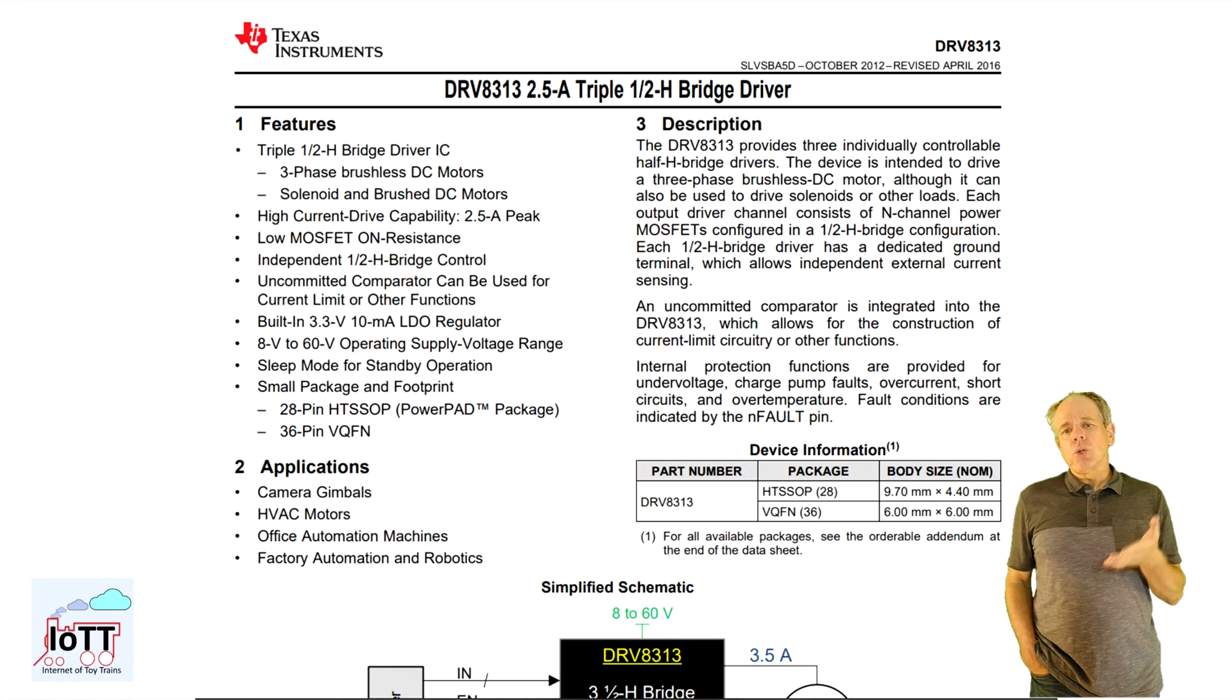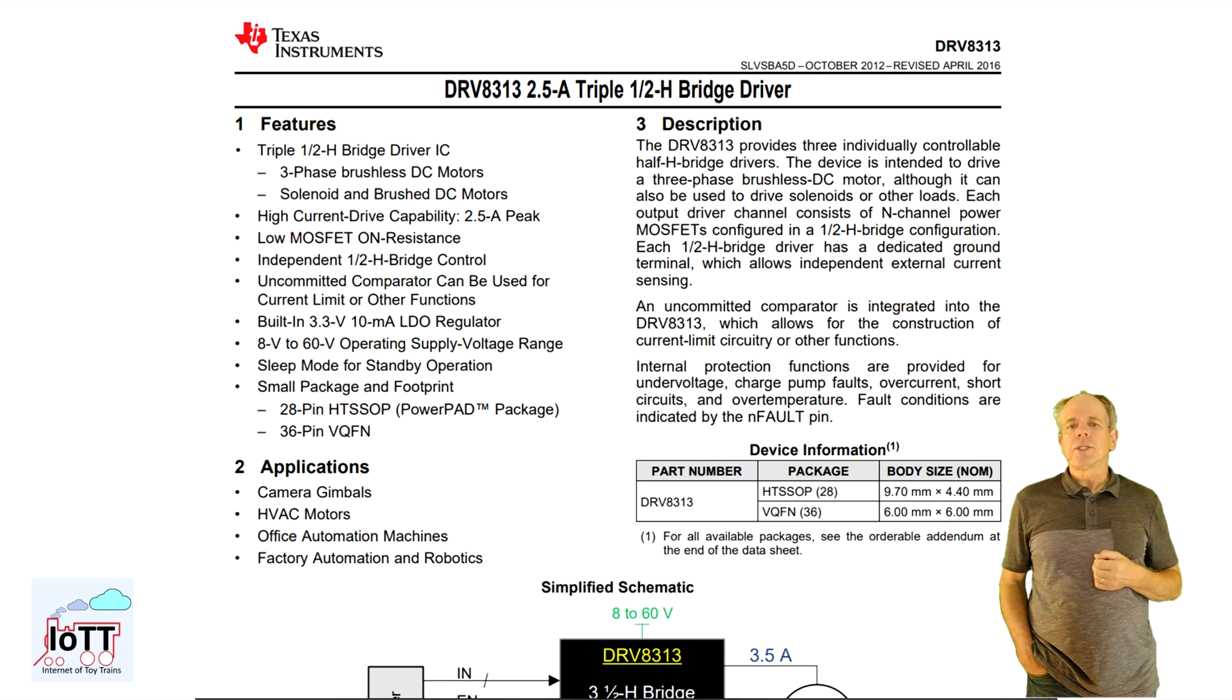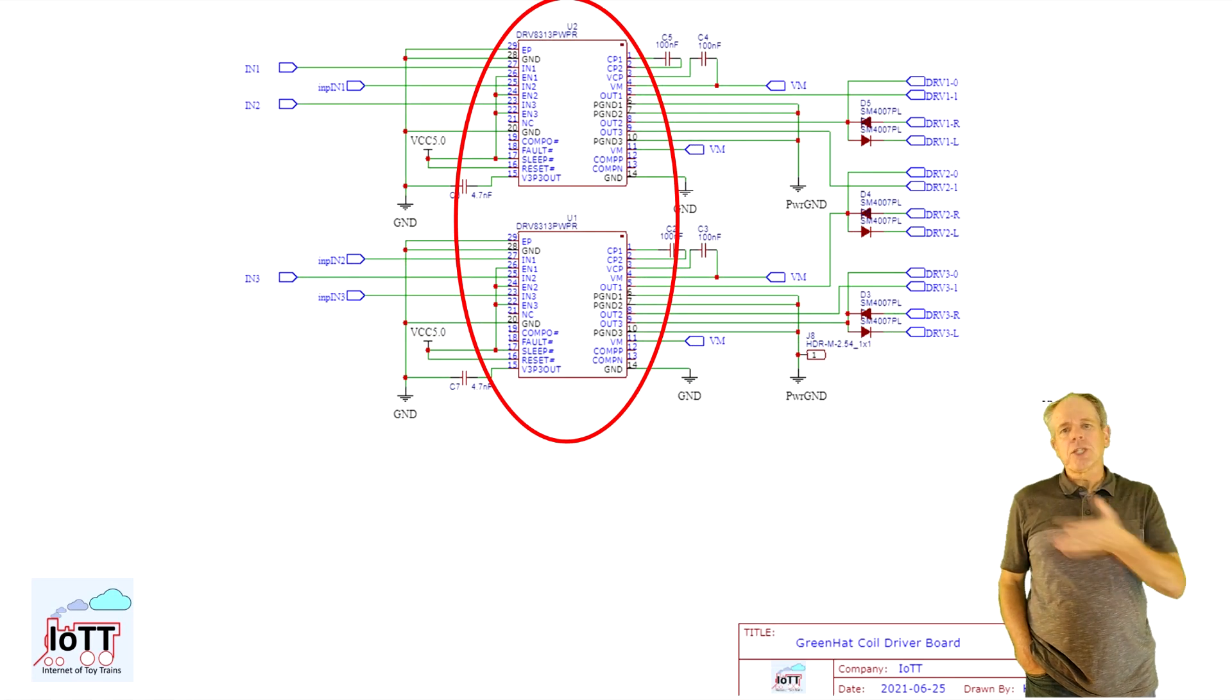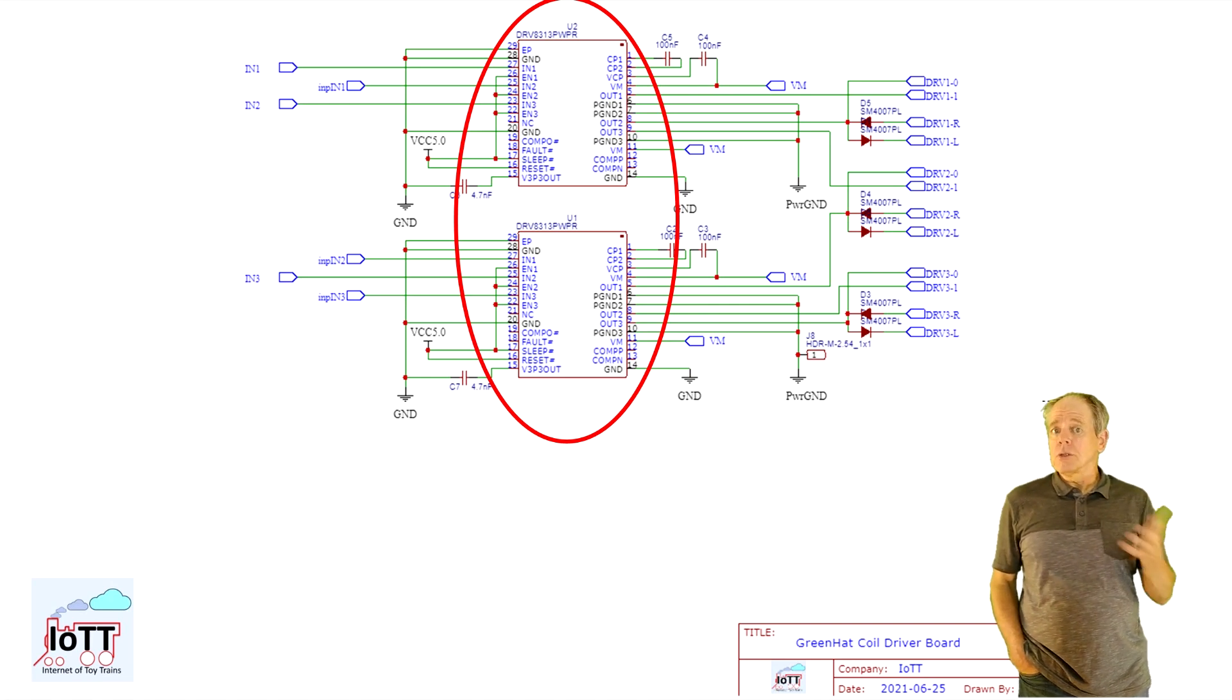Each of them has three half H-bridges, so together they offer three full H-bridges. The reason I chose this chip is the input voltage range of up to 60 volts and the output current of up to 2.5 amps. It is mainly used for brushless motors. That's why there are three half-bridges. Two of these chips combined make three switch drivers, so here you have the reason why the module has three channels and not two or four.